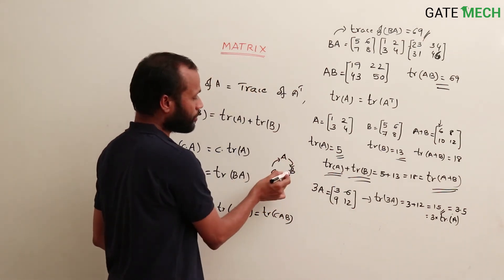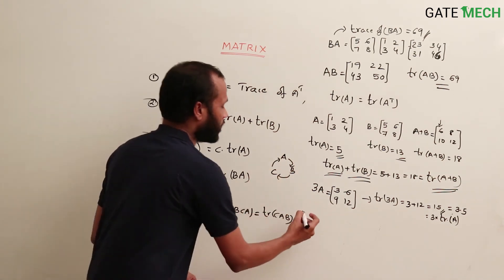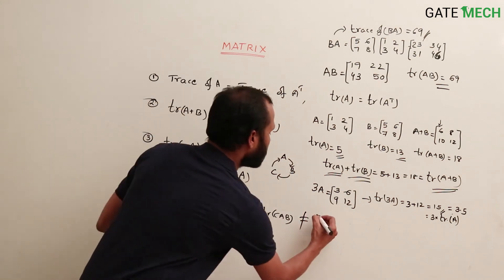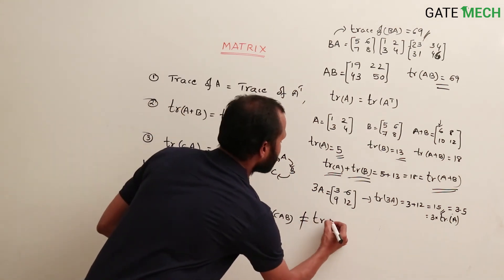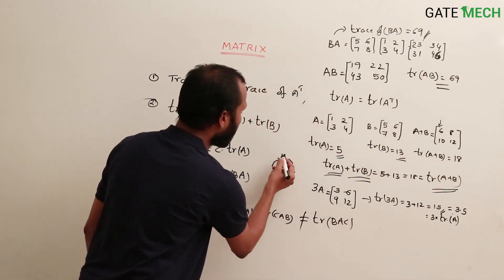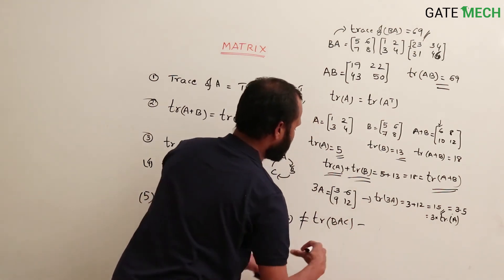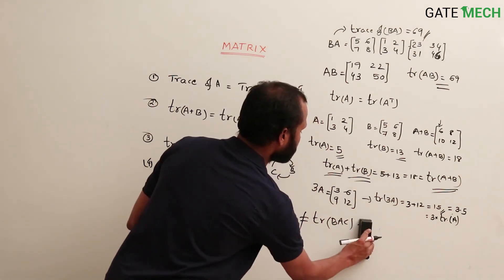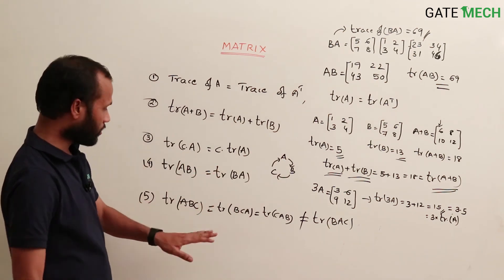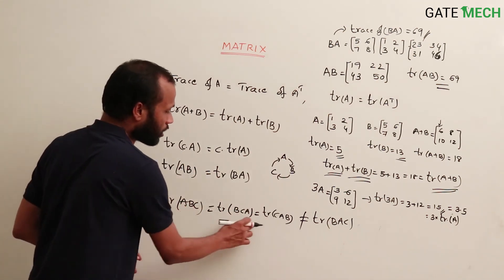If you change the order — for example, writing BAC or ACB instead of following the cyclic order — the trace would not be equal. Only cyclic permutations preserve the trace.